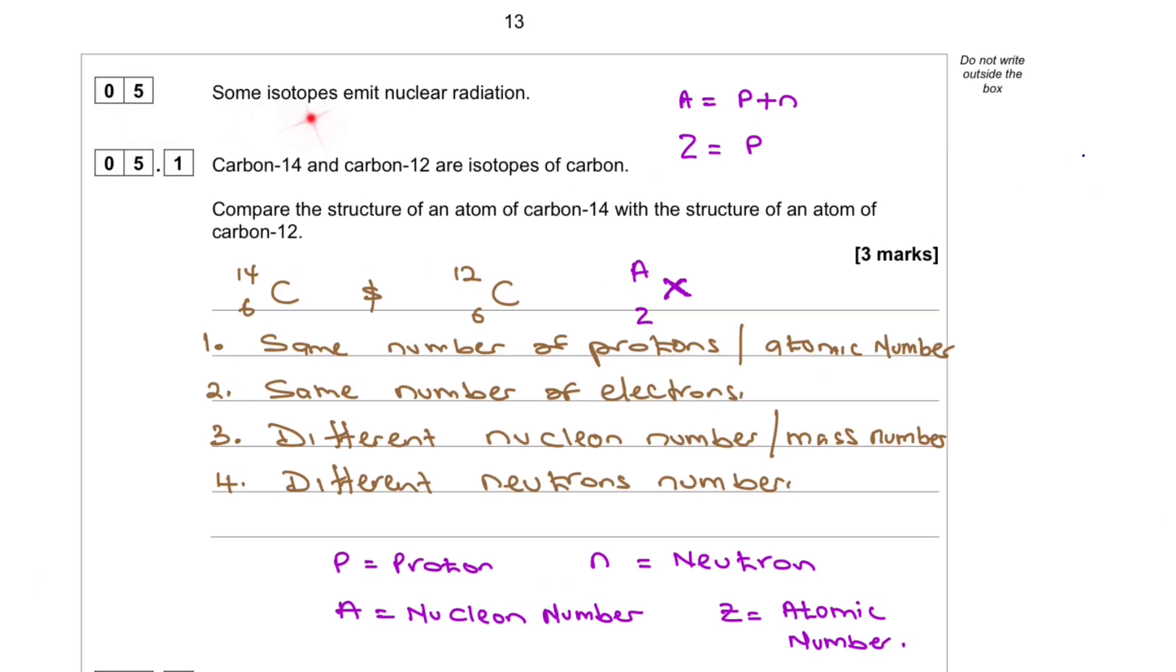Question 5. Some isotopes emit nuclear radiation. Carbon-14 and carbon-12 are isotopes of carbon. Compare the structure of an atom of carbon-14 with the structure of an atom of carbon-12.